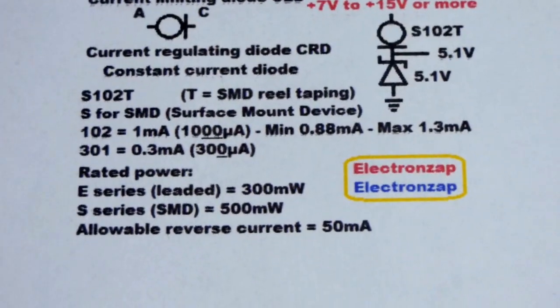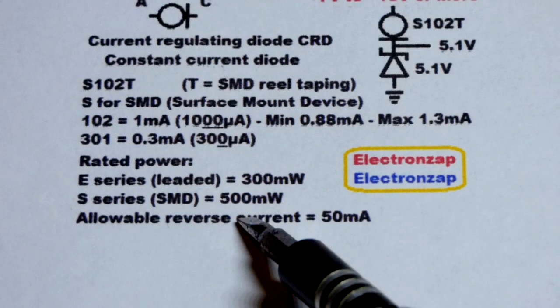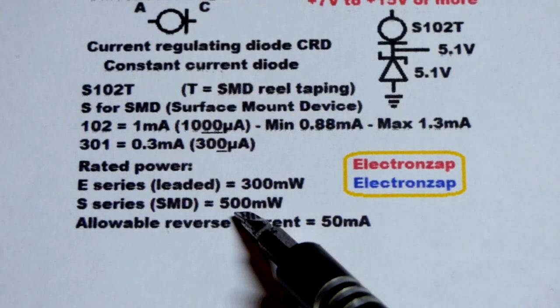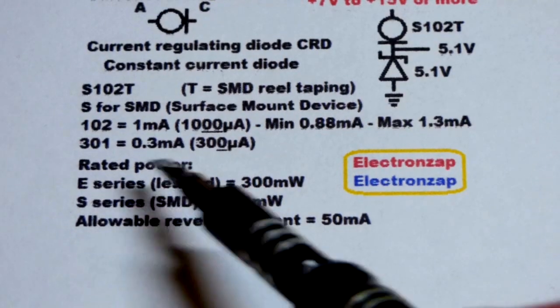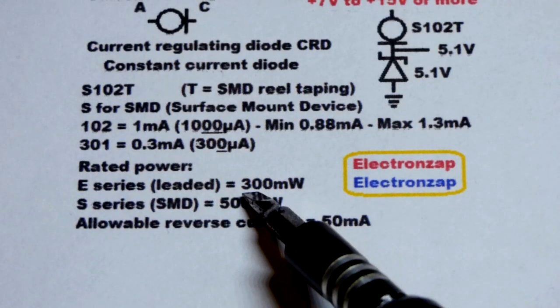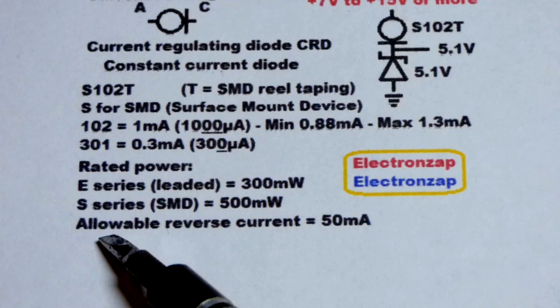We have the power rating that I got from the data sheet, so it's interesting. This is a small component, but apparently it's a 500 milliwatt component, so we could have raised the voltage by a lot. The E-series would be the leaded kind, the wires coming out that you solder on the other side of a breadboard from where you insert the component, 300 milliwatt. So as I said before, it's not a diode.